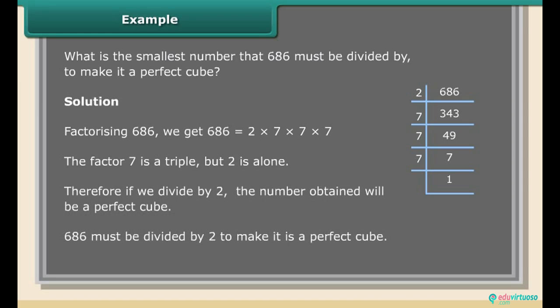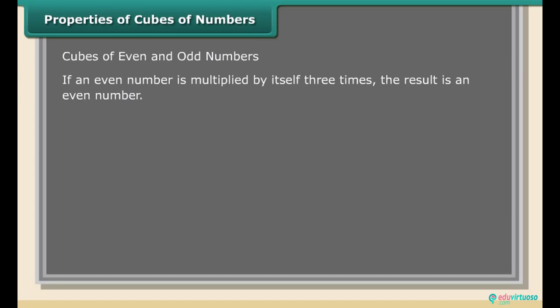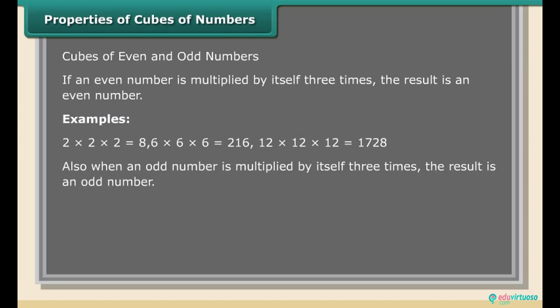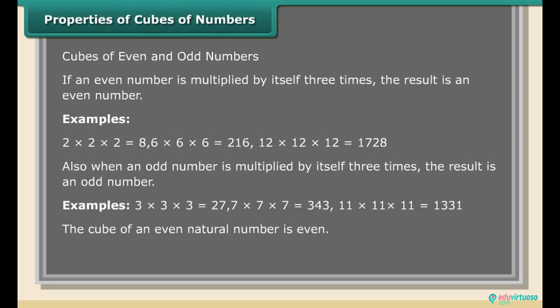Properties of cubes of numbers — cubes of even and odd numbers: If an even number is multiplied by itself three times, the result is an even number. Examples: 2³ = 8, 6³ = 216, 12³ = 1728. Also, when an odd number is multiplied by itself three times, the result is an odd number. Examples: 3³ = 27, 7³ = 343, 11³ = 1331. The cube of an even natural number is even; the cube of an odd natural number is odd.